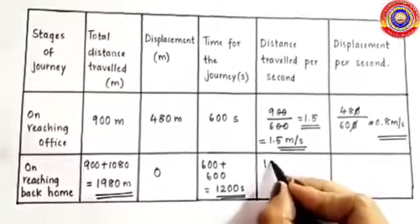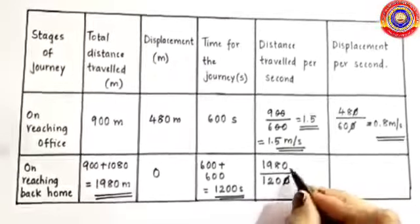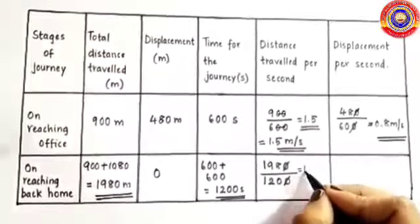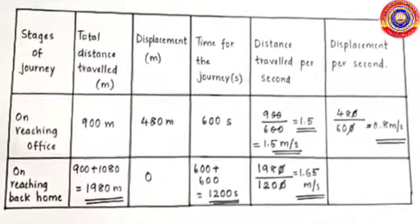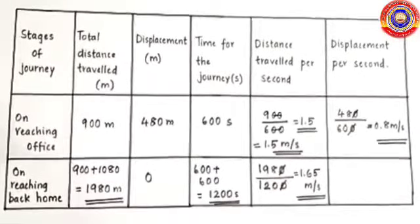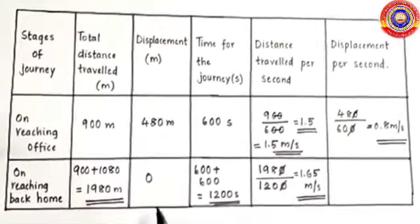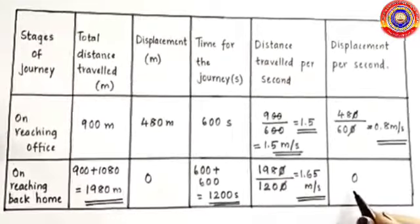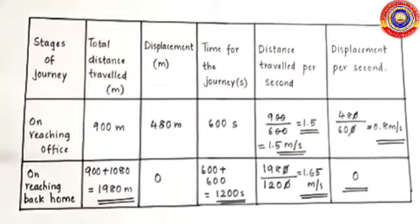To travel 1,980 metres he takes 1,200 seconds, so the distance per second is 1,980 divided by 1,200, which equals 1.65 metres per second. For displacement per second, since on reaching home the initial and final points are the same, displacement equals zero. So 0 divided by 1,200 seconds equals zero.